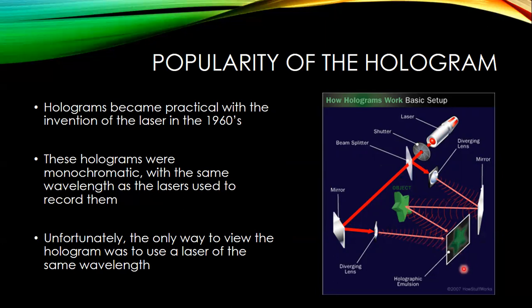Unlike a typical photograph, it would retain all the three-dimensional information from the original object. That means if you looked at it from over here as opposed to there, you would see the object slightly rotated and in a slightly different position.